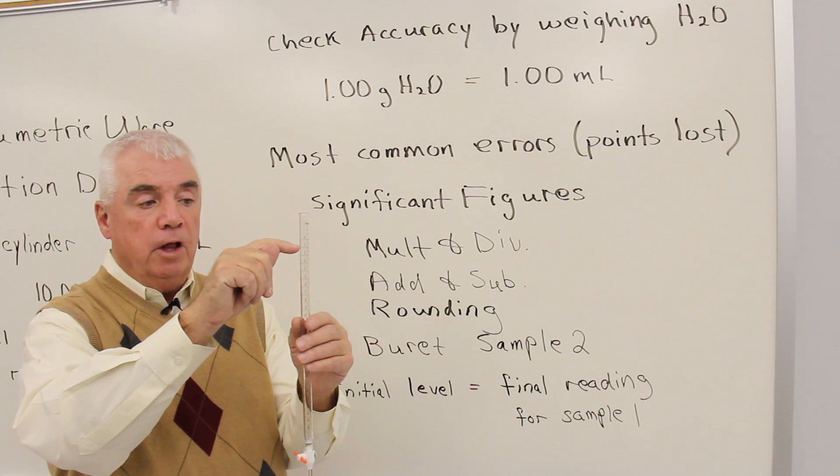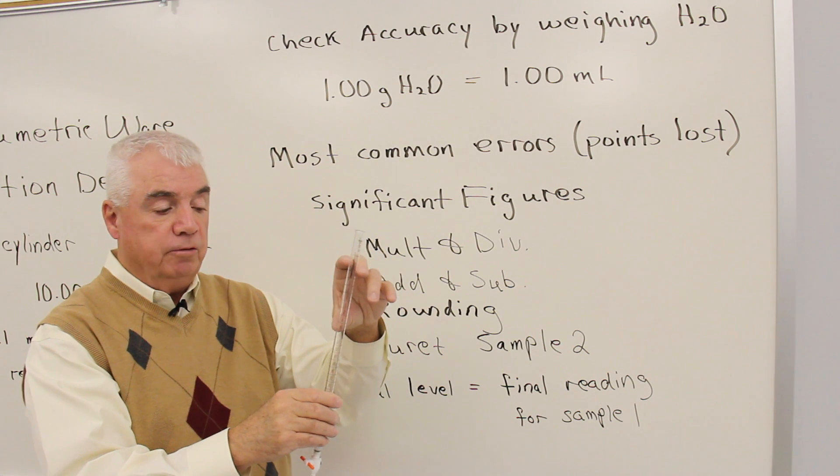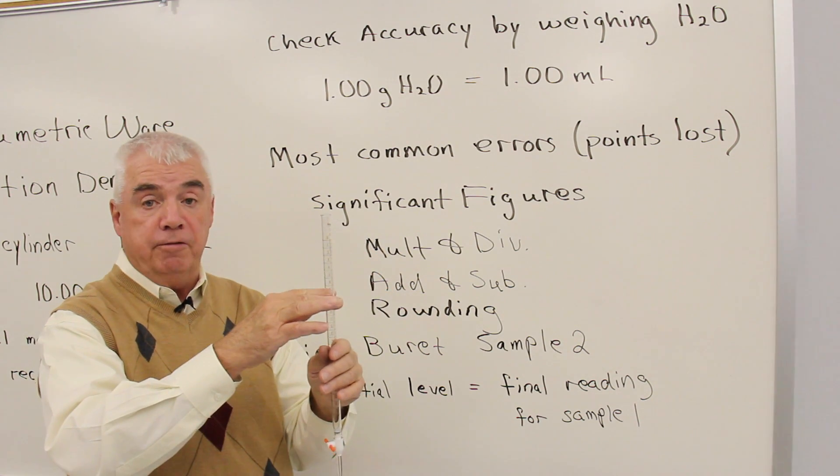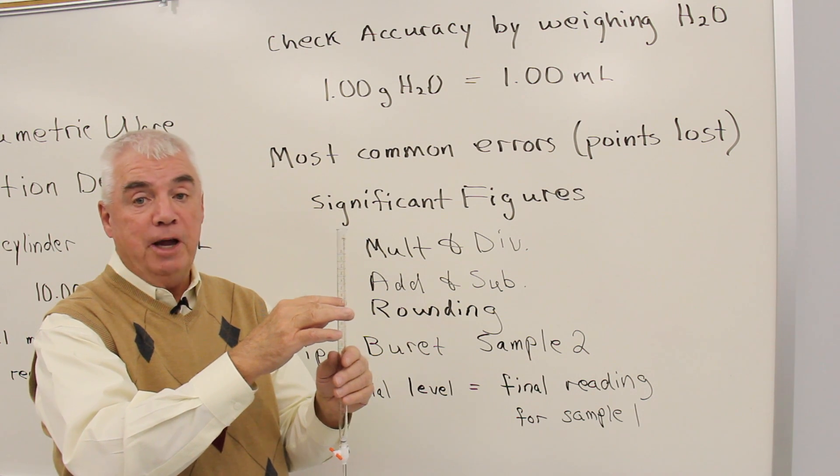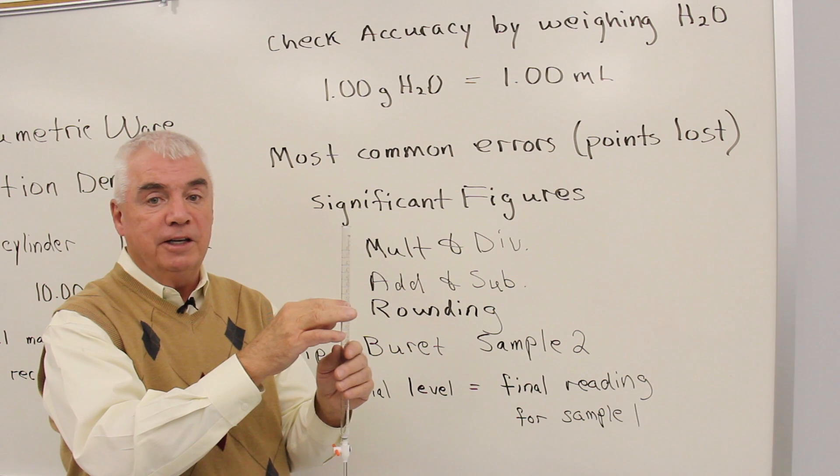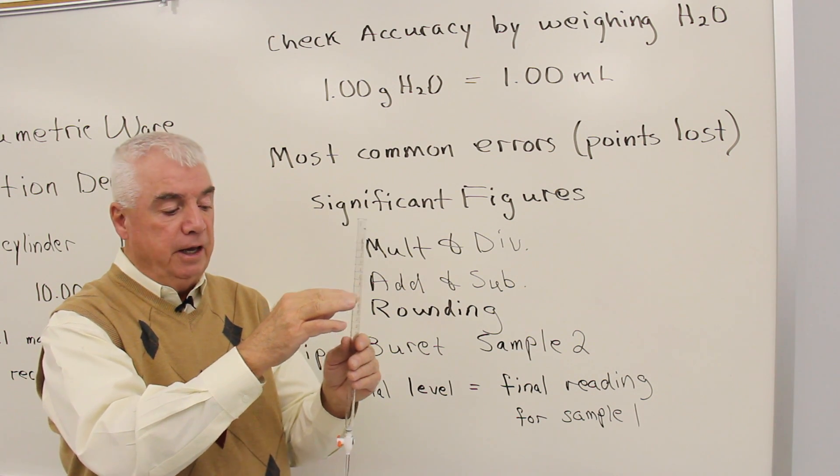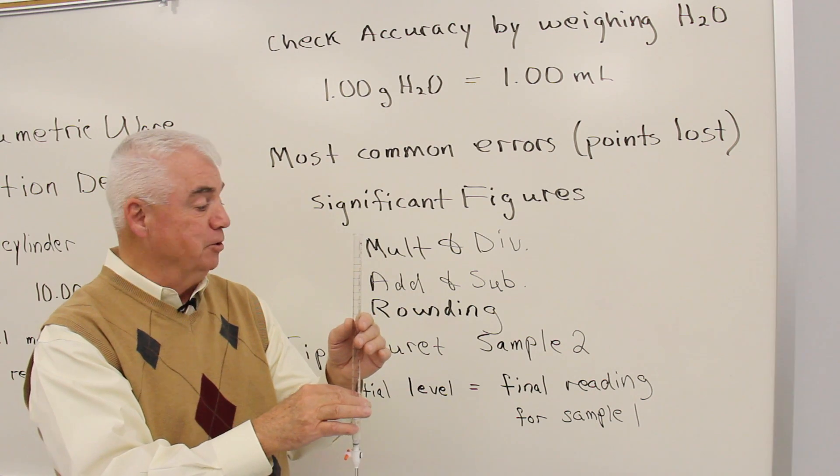You'd begin with an initial level up in this range, let out a certain volume of liquid, down here's the final reading, that's sample one. And then for sample two, we use that final reading for sample one as the initial reading, let out some more liquid, down here's the final reading for sample two.